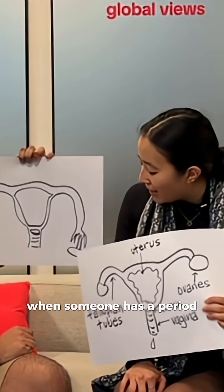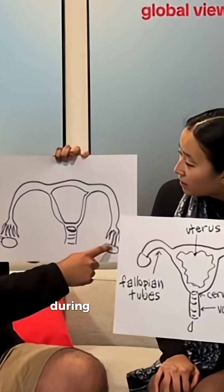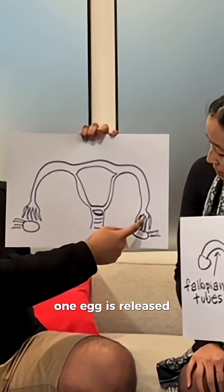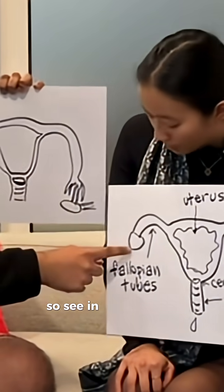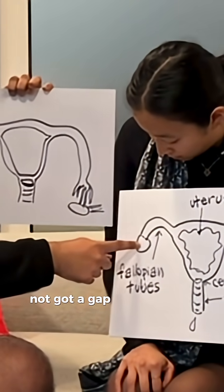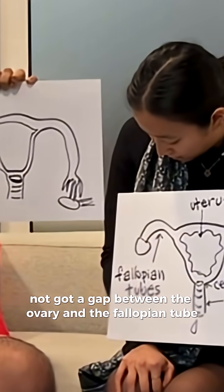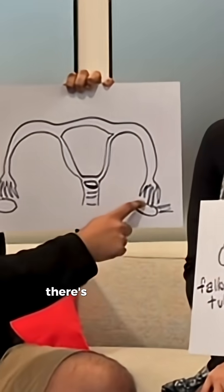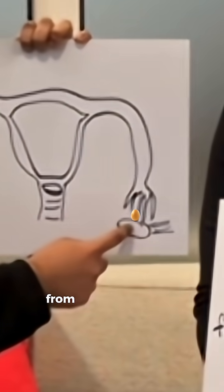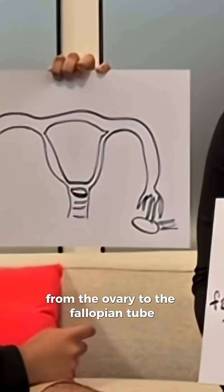When someone has a period, how many eggs are released? During ovulation, one egg is released. In yours, you've not got a gap between the ovary and the fallopian tube. There's actually a gap between them where the egg jumps from the ovary to the fallopian tube.